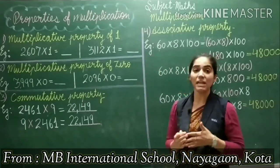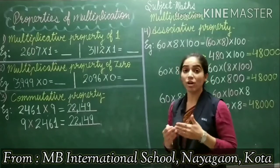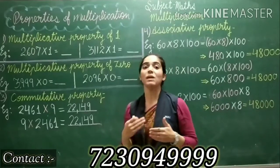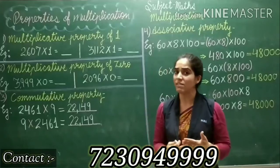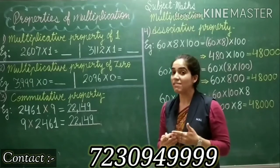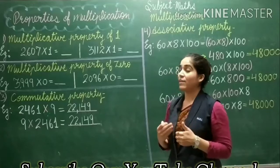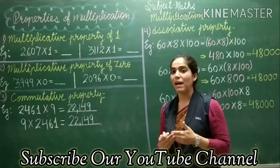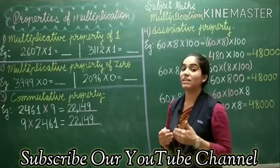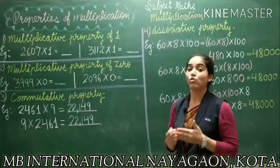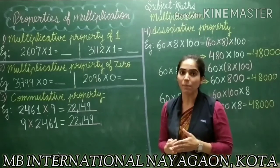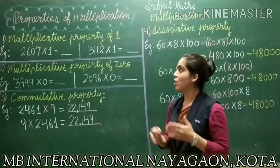The first property is the multiplicative property of 1. What does this property say? The property says, whenever you multiply any digit or any number by 1, you get the number itself. Whenever you multiply any number by 1, you get the same number as a product. The result of the multiplication is called product.